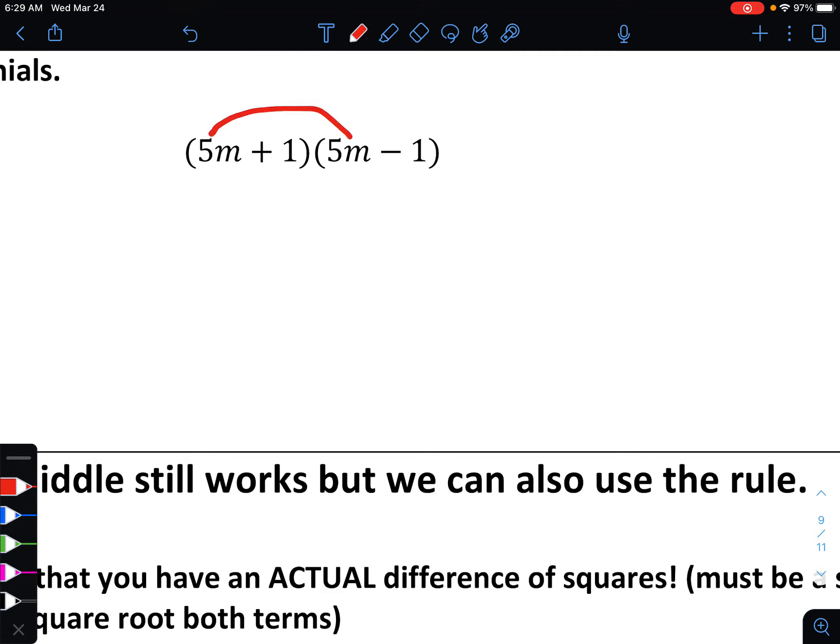In the next example, we're going to see something kind of similar happen. So when we distribute, we'll take 5m multiplied with 5m is going to be 25m squared. 5m multiplied with a negative 1 is a minus 5m. And then distribute the 1. So 1 multiplied with 5m is a plus 5m. And 1 multiplied with negative 1 is a minus 1.